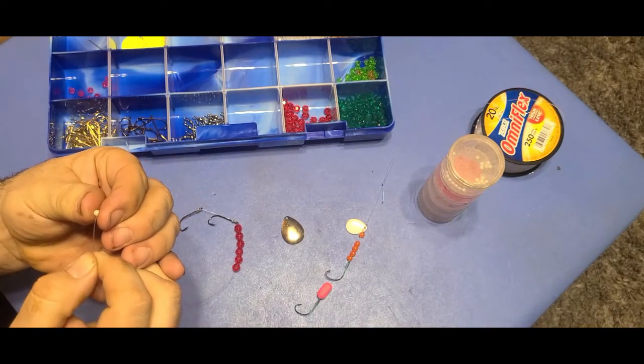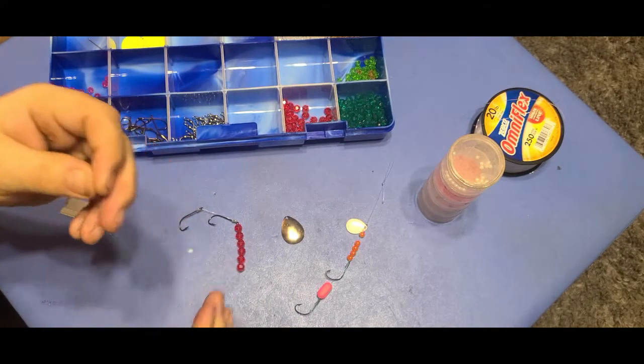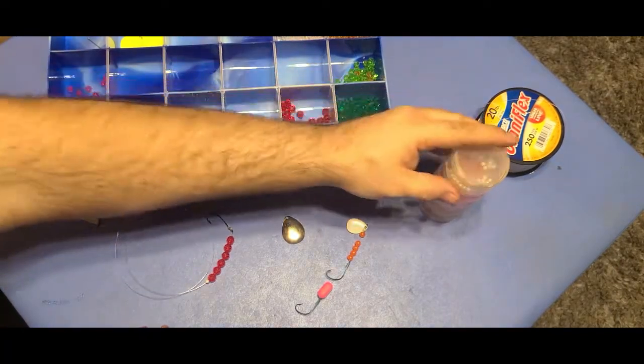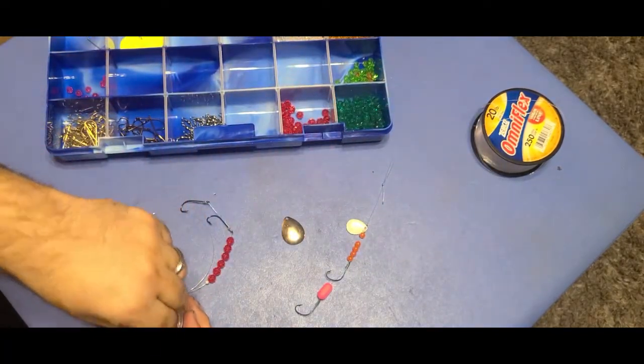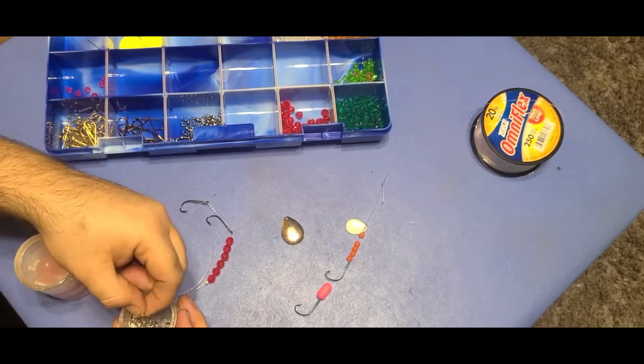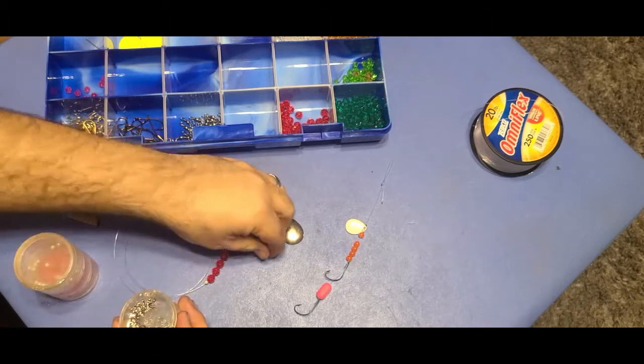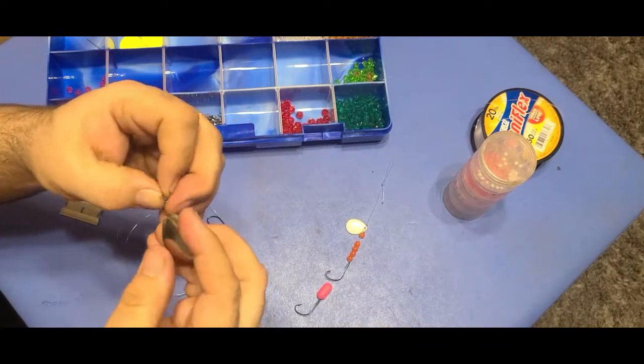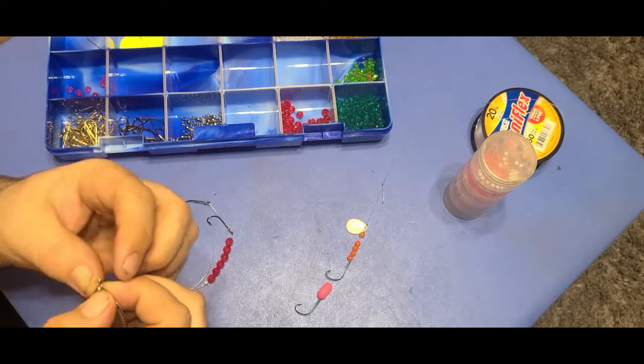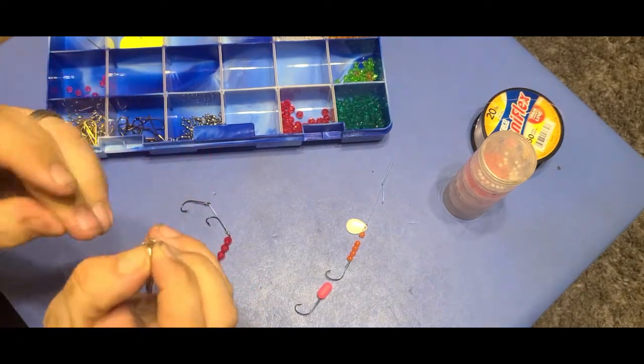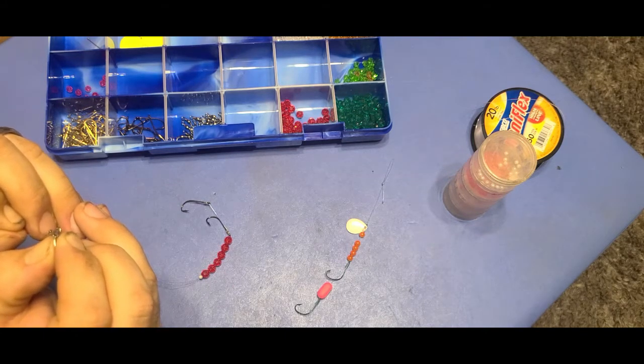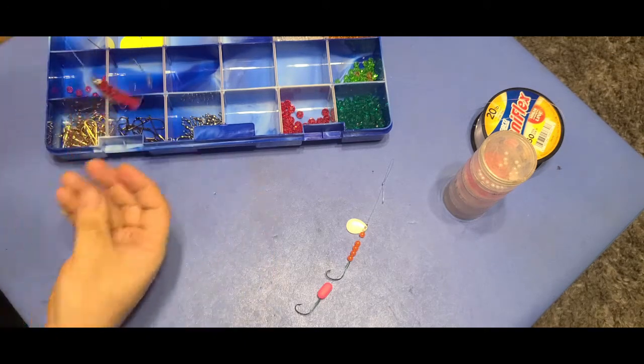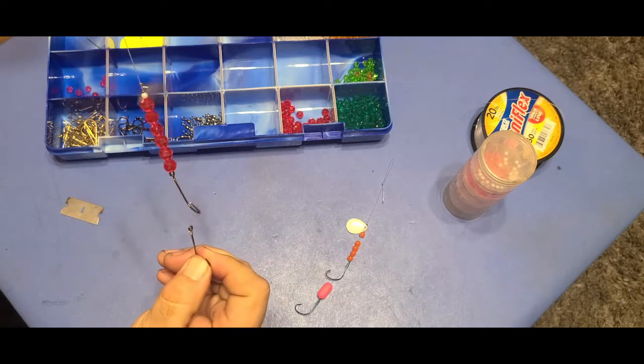These white beads are very smooth, the acrylic beads are not. Next thing we're going to add is a clevis and then our spinner blade. Going to thread our line through both, make sure we're in both.